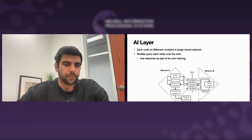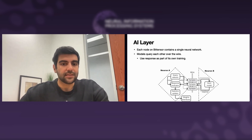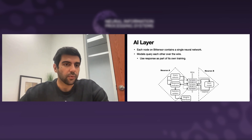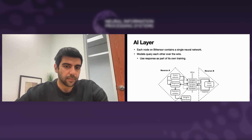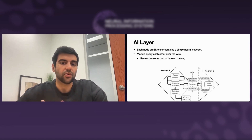Now let's talk about the AI layer. We refer to each node on the BitTensor network as a neuron. These neurons aren't to be confused with traditional neurons in neural networks. Instead, each neuron on the BitTensor network is a full computational node that contains a single neural network within it. This single network is being trained on the BitTensor protocol to solve some specific problem. Neurons use gRPC to query each other over the wire and use responses from peers to train the neural network they contain.